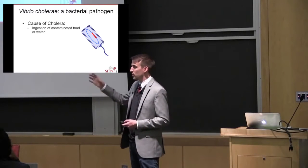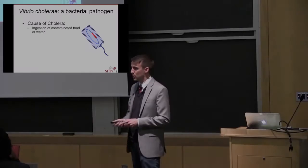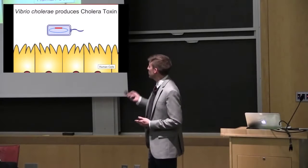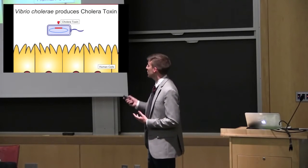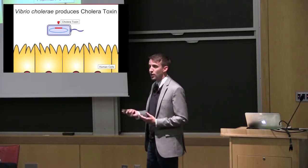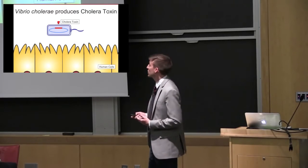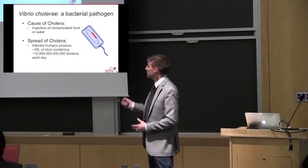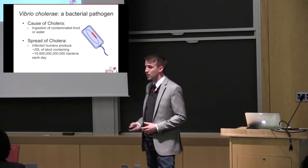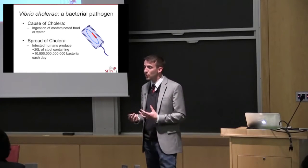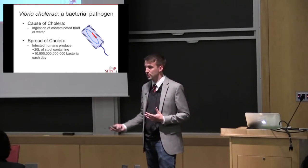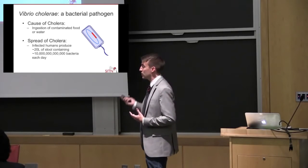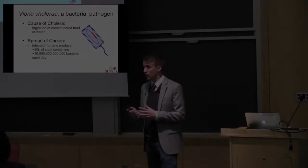The virus isn't causing disease in humans — the virus helps the bacterium cause disease in humans. Once the bacteria arrives, it begins producing a protein coded for by this viral genetic material. The protein is called cholera toxin, and it enters intestinal cells, disrupting their function and causing them to excrete water into the intestine, causing massive diarrhea.